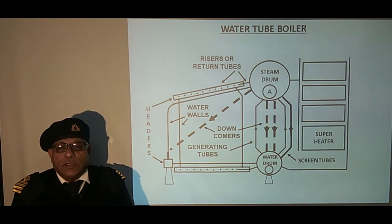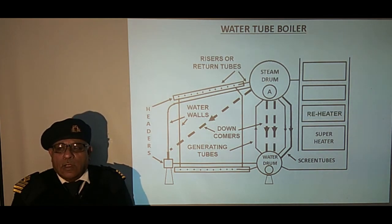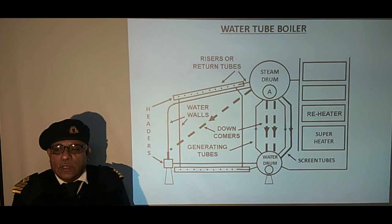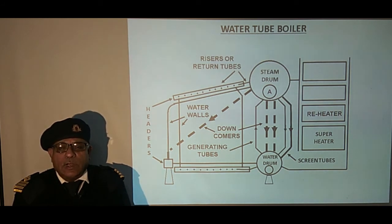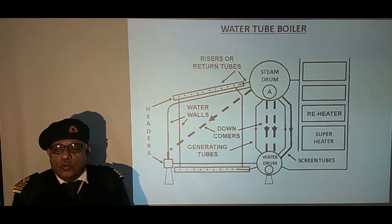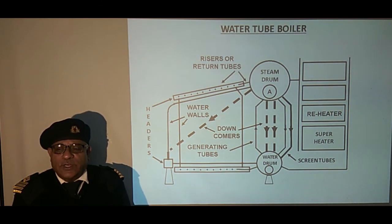The next component is the reheater. The reheater is used to increase the degree of superheat once the steam has been used in the high-pressure turbine, to prevent damage to the turbine blades in the low-pressure turbine due to erosion caused by wet steam.